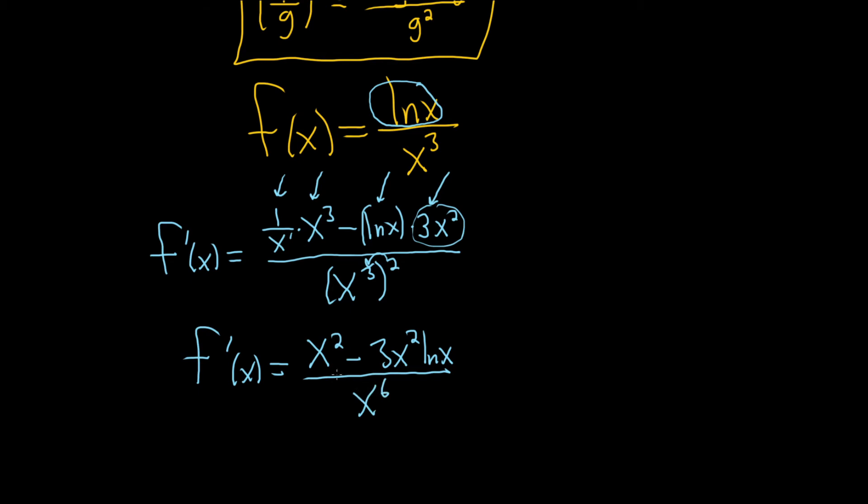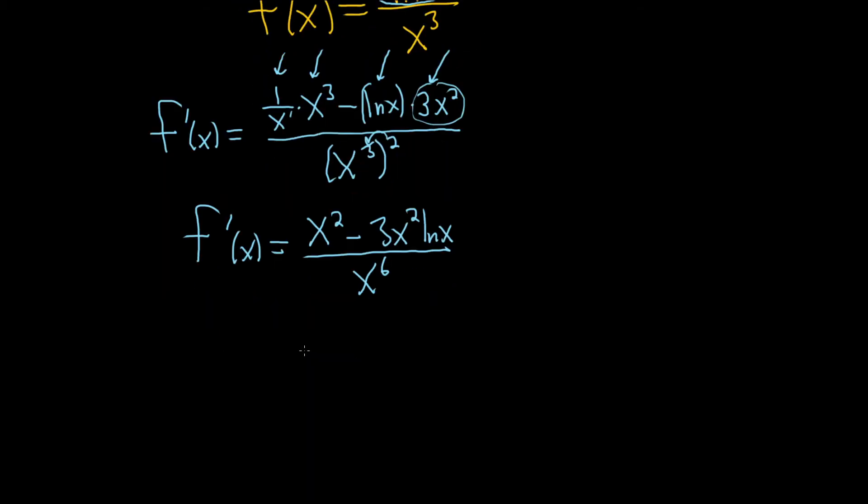We're not done. This can be simplified. Two ways to do it. You can factor something out or you can break it up into two different pieces. Let's factor out the common factor in the numerator. So the greatest common factor in the numerator is going to be x squared.